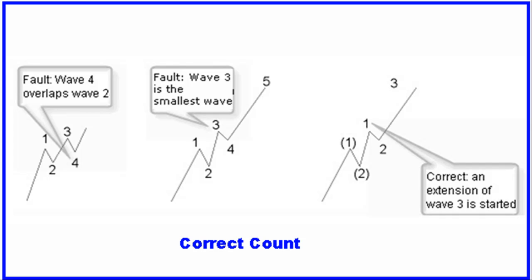The figure at the left shows a faulty count with waves 4 and 2 overlapping. The figure in the middle shows a wrong count because wave 3 can never be the smallest wave. This is corrected in the figure at the right, starting an extension of wave 3 with an impulse wave of a lower degree.